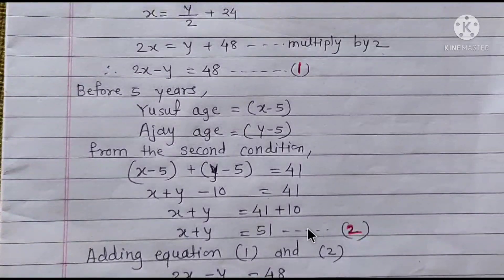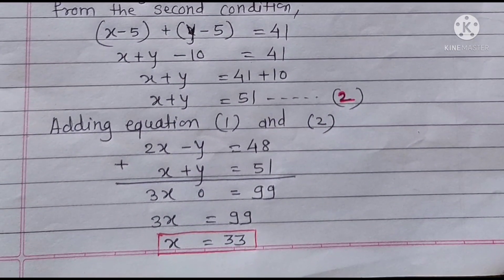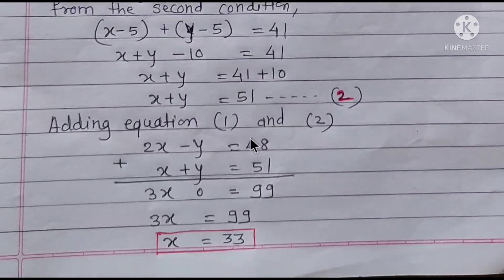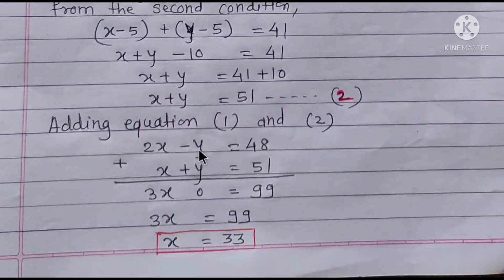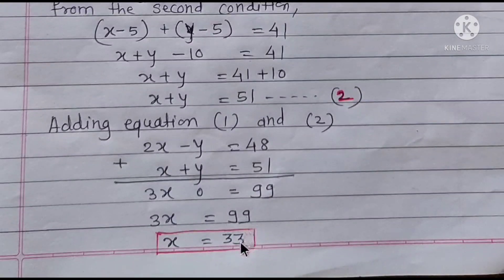Adding Equation 1 and Equation 2: 2X plus X gives 3X, and minus Y plus Y cancels to 0. So 48 plus 51 equals 99, giving 3X equal to 99. Dividing both sides by 3, X is equal to 33.